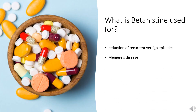Beta-histine is indicated for the reduction of recurrent vertigo episodes associated with Meniere's disease in patients 18 years old and above.